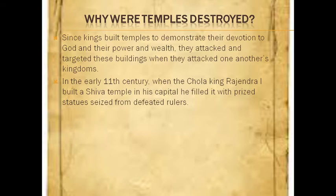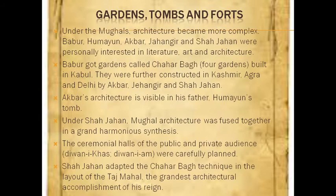Temples were also destroyed. Since kings built temples to demonstrate their devotion to God and their power and wealth, they attacked and targeted these buildings when they attacked one another's kingdom. In the early 11th century, when the Chola king Rajendra I built a Shiva temple in his capital, he filled it with prized statues seized from defeated rulers.